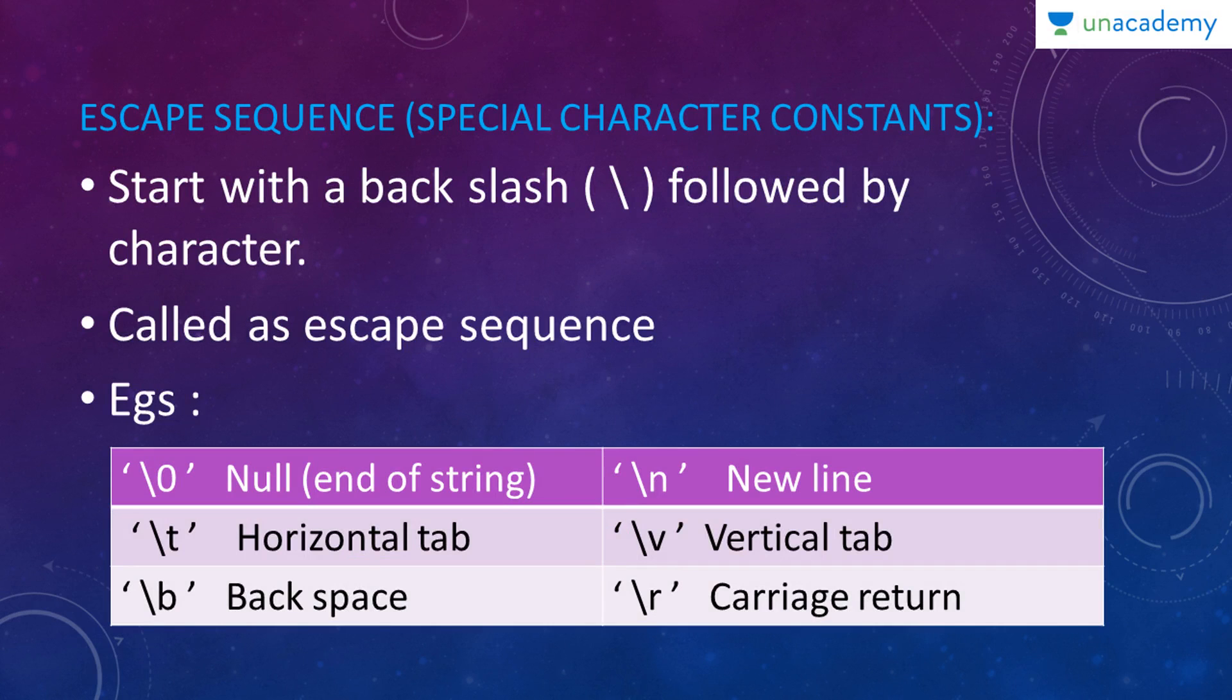Next, escape sequences are also called as special character constants. They are called as escape sequences. They start with a backslash followed by a character. Let us see a few examples. In a program, if you add something like this, it is called a null or end of a string which is backslash followed by a zero. Next, you can have a new line sequence in which the pointer would shift to the next line or slash followed by t which is a horizontal tab. Similarly you have vertical tab, backspace and carriage return.